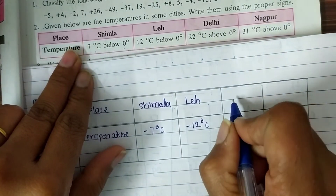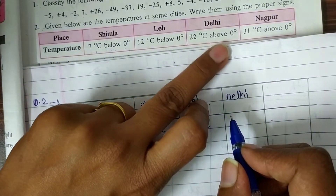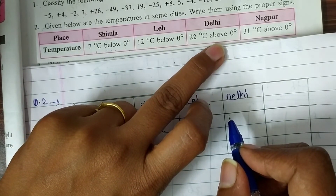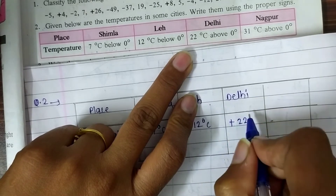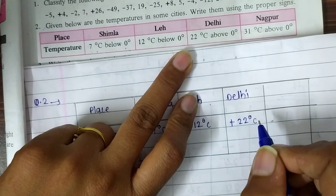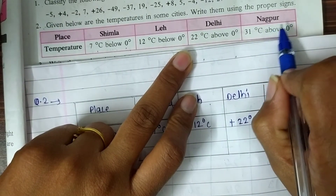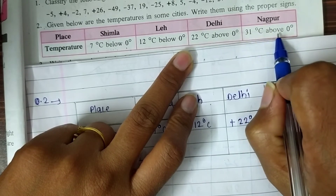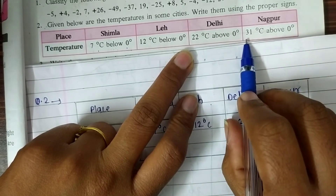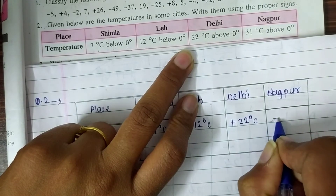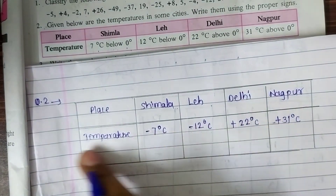The next city is Delhi, and its temperature is 22 degrees Celsius above 0 degree. 'Above' means greater than 0 degree, so it is a positive number — write plus 22 degree Celsius. The next is Nagpur, and its temperature is 31 degrees Celsius above 0 degree, so we put a plus sign before 31 degree Celsius. This is the answer for question number 2.